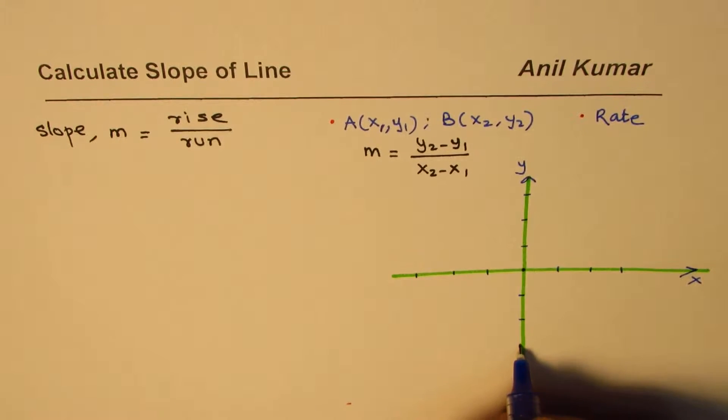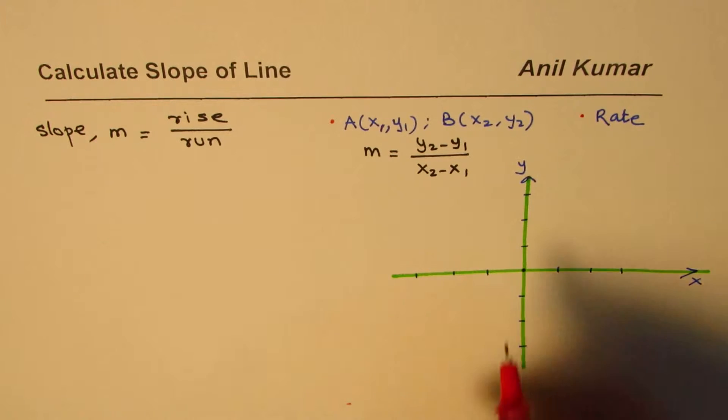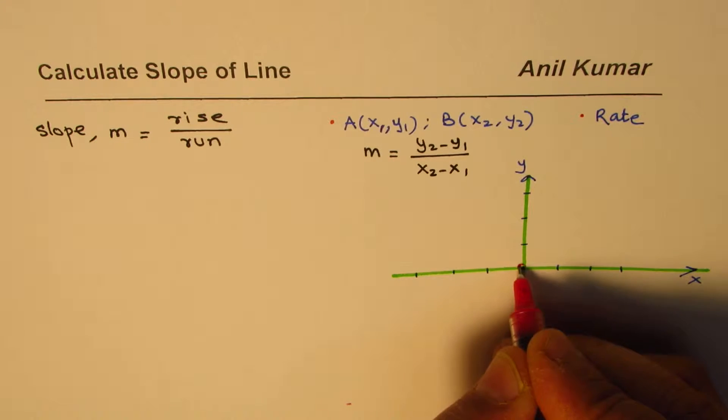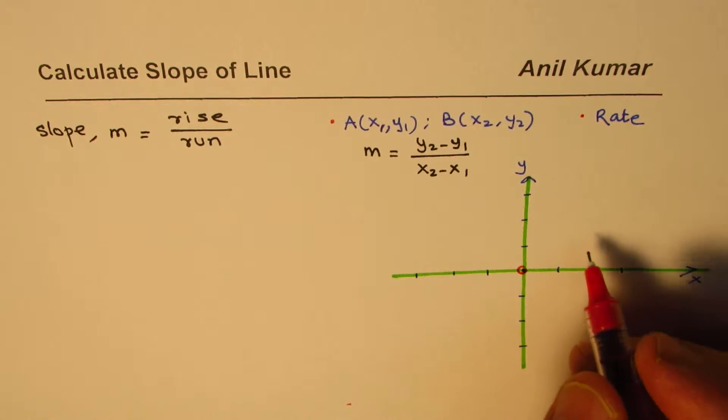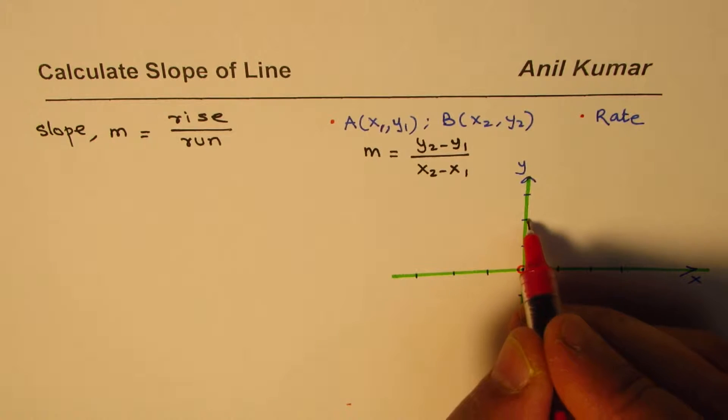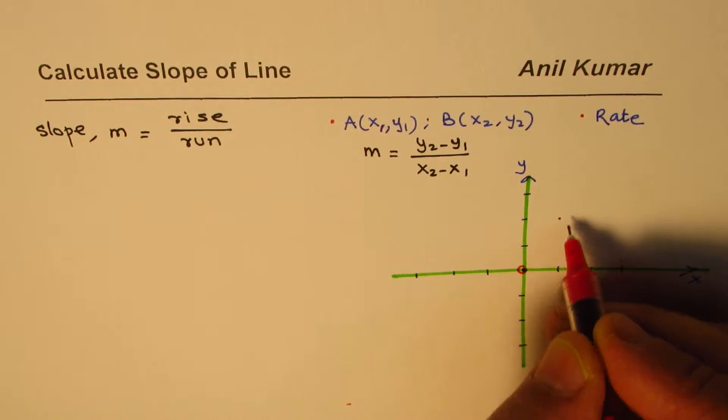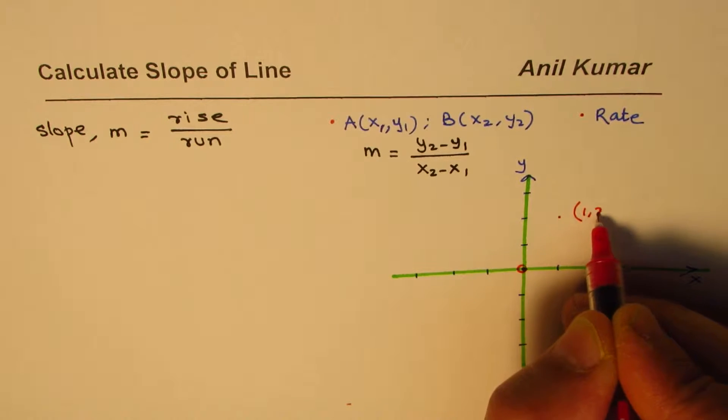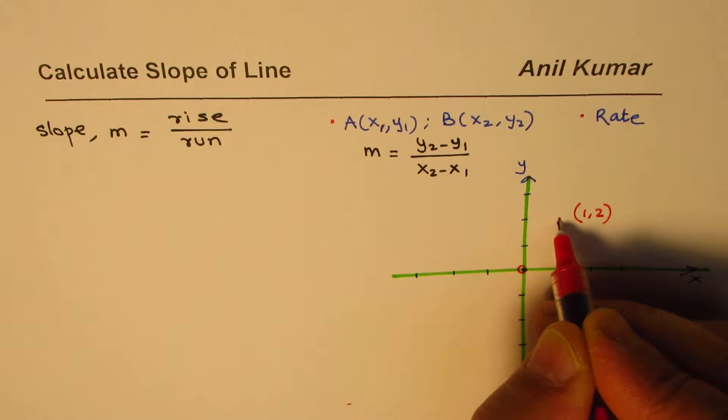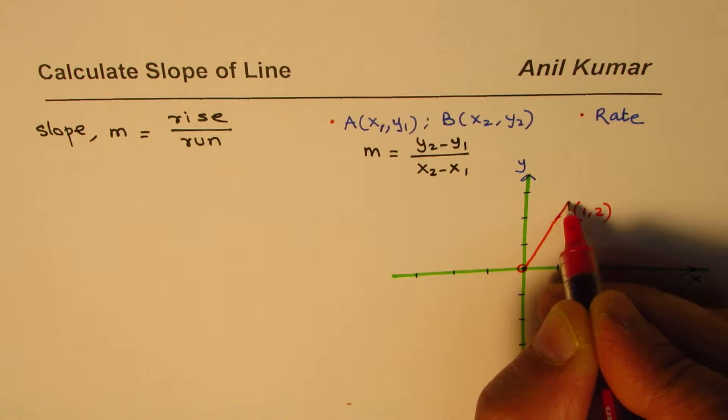Let me first consider a line which is going through the origin. If I have a line which goes through the origin and we know one coordinate value, let's say here at x value of 1, y value of 2. We are considering a line which is going through this point. So this is the line.